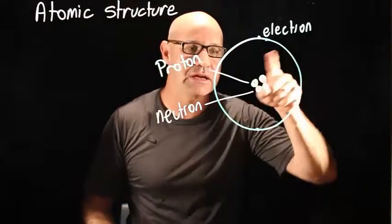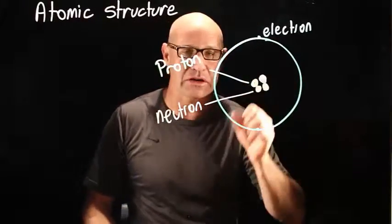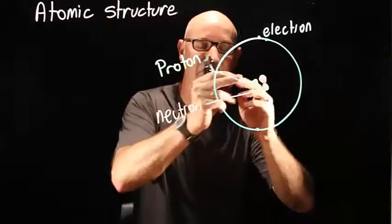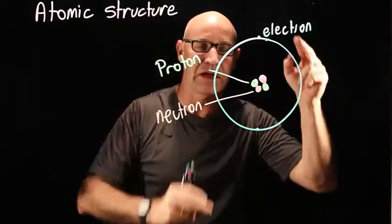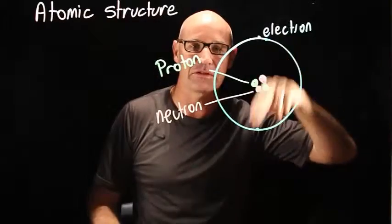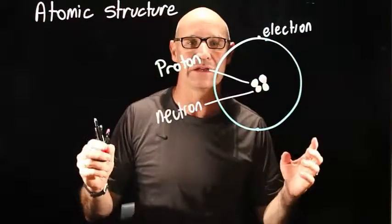And in between, there's nothing. The nucleus is actually really quite small. It's a very large gap of nothing, and then the very tiny electrons buzzing around the outside. And that is the atom.